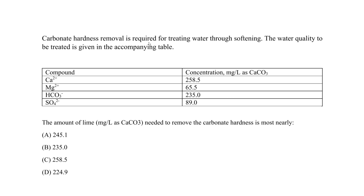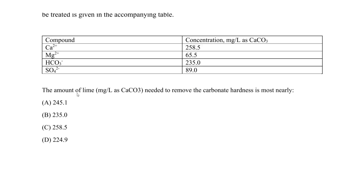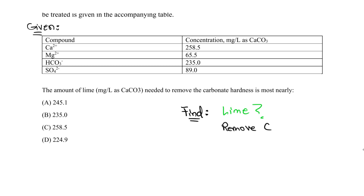Let's do an FE-type question. Carbonate hardness removal is required for treating water through softening. The water quality data is given in a table with concentrations in mg/L as CaCO₃. The question asks: what is the amount of lime in mg/L as CaCO₃ needed to remove the carbonate hardness? We want to find how much lime is needed to remove only the carbonate hardness, not the noncarbonate.